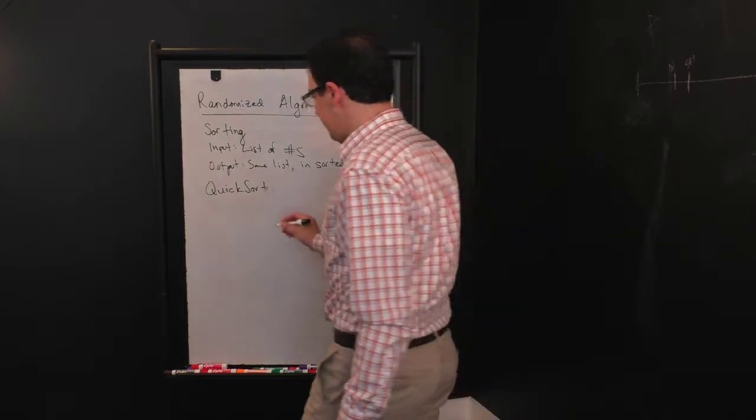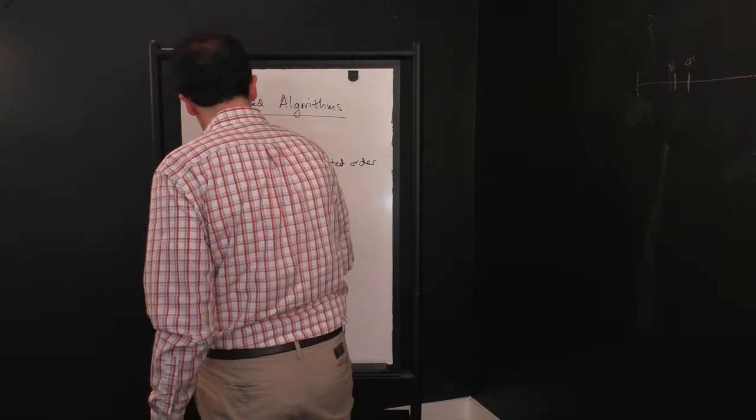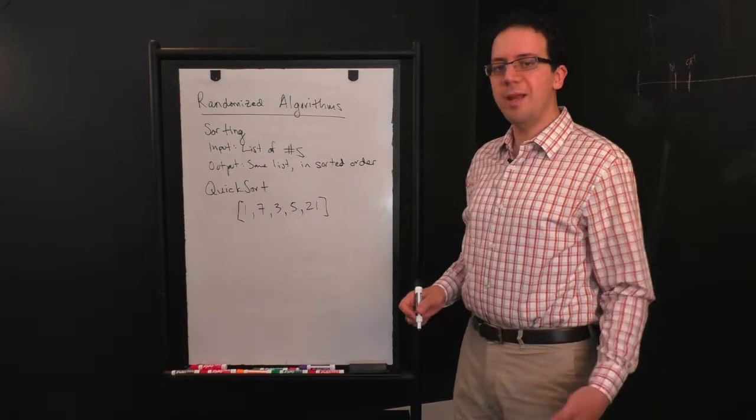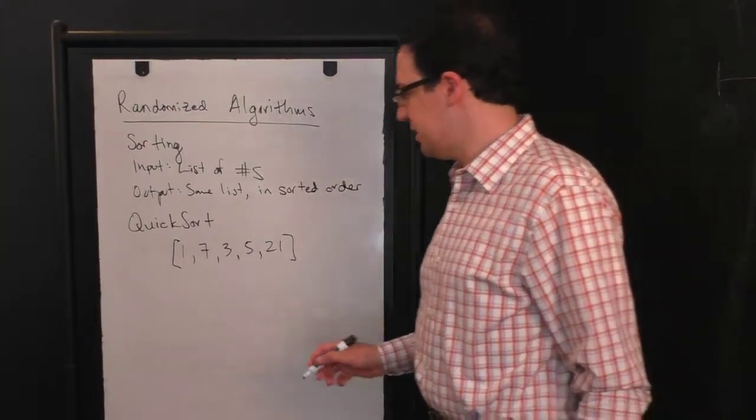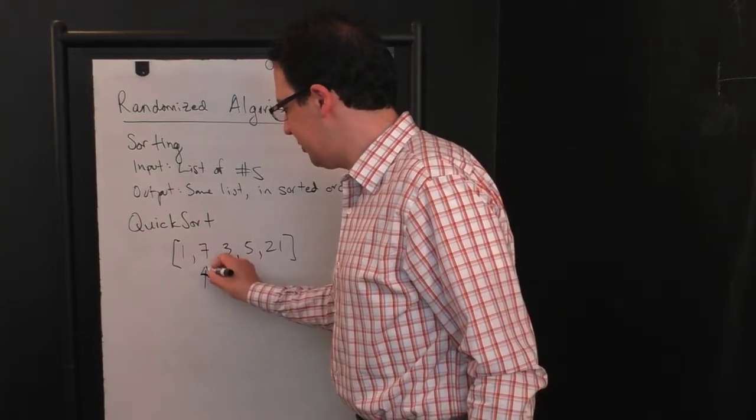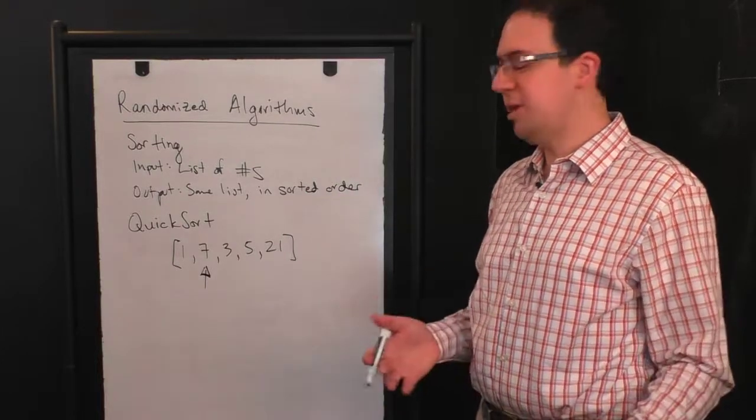So the idea of Quicksort is you have a list of numbers. And you're going to randomly pick a number from this list. So let's say I happen to randomly pick seven. And just to be clear,